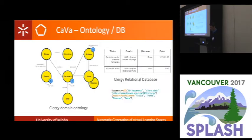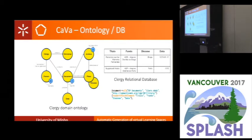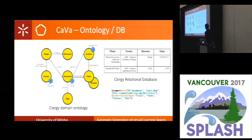Imagine we have this ontology for the clergy domain, where we have the document class that belongs to an archive, that takes place at a place — a diocese — and has a coherent location and contains a date. What we want to do is get the instances from the relational database — like this data — according to these labels: titulo, fundo, diocese, data. This is the right operator to do this, because we will try to get the document concept from the ontology based on those mappings.